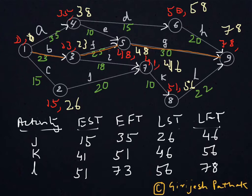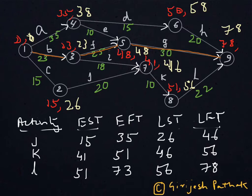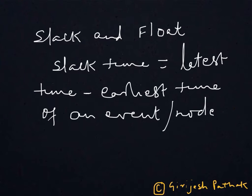For all the nodes where earliest time and latest time are the same, they are actually on the critical path and the slack time for them is 0. But for the rest of the nodes where the latest time is higher than the earliest time, the difference between the two gives us the slack time. Slack is generally related with nodes or events, and the slack time of any event is computed by subtracting earliest time from the latest time of that event.